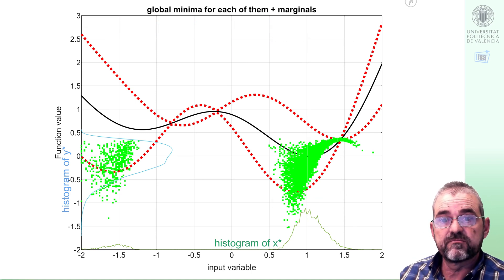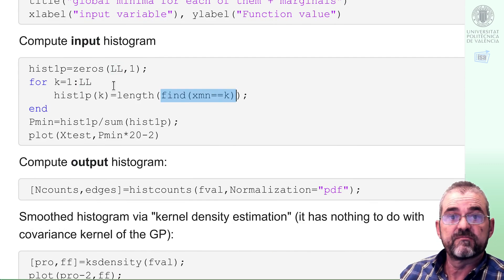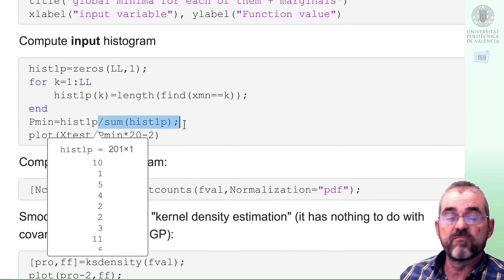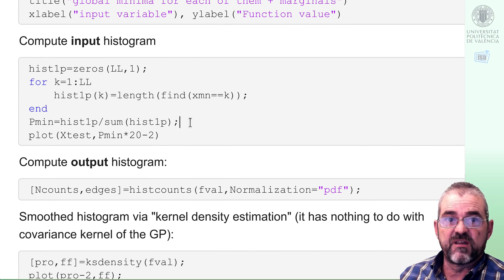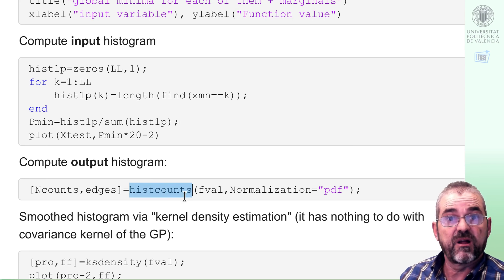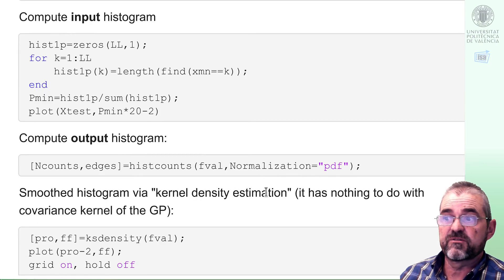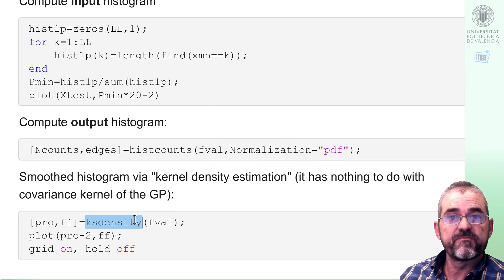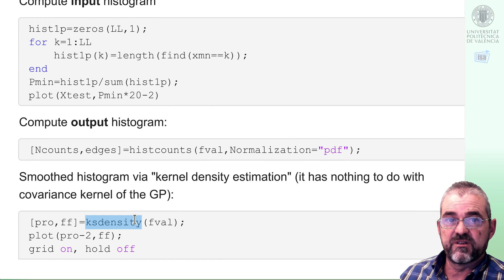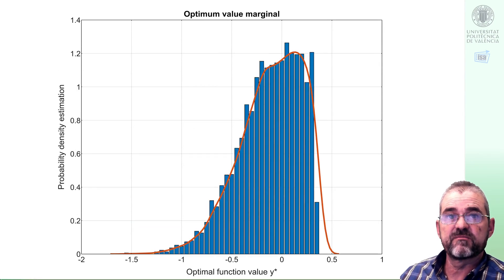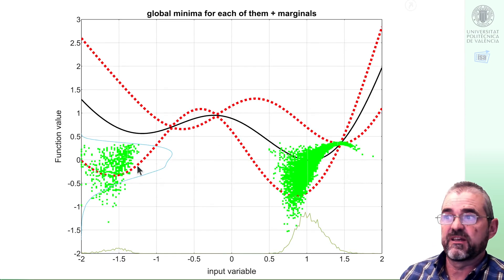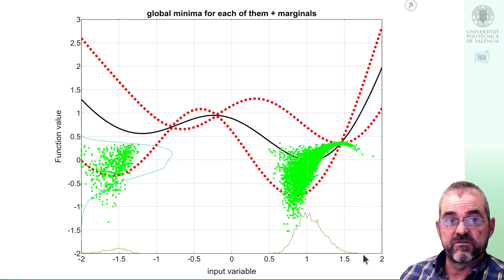Let us have a quick look at the code. The input histogram is just counting how many minima are at a particular point and dividing by the sum to get something that adds one. But we can do the same in one line in MATLAB using this histogram counts command. And in order to get the smoothed histogram, I use this ks density, which applies an algorithm called kernel density estimation. That should not be confused with the covariance kernels we are using in the Gaussian process computations. So forget this kernel and k here. Just think that there is a MATLAB command to get a smoothed histogram whose inner workings I am not wishing to discuss.